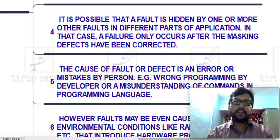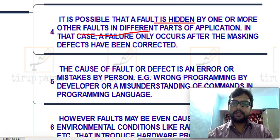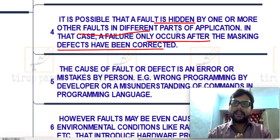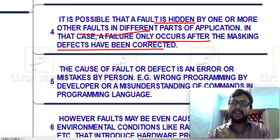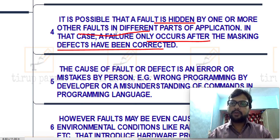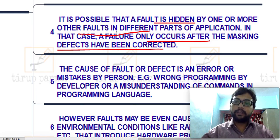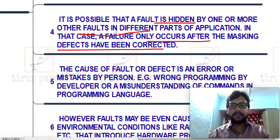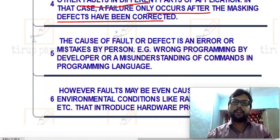It is possible that a fault is hidden by one or more other faults in different parts of the application. In that case, a failure occurs only after the masking defect has been corrected. We cannot say there are no defects — sometimes errors or defects are hidden by other faults. Once you start rectifying faults, you may identify that there are further faults present, which were not visible until the masking faults were fixed.